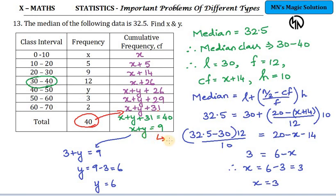This is the median. You should know the median class. 32.5 is given to us. It is a value which lies in between 30 to 40. So, obviously, median class is 30 to 40. So, median class is 30 to 40. Its lower limit is 30. And its corresponding frequency is 12. And cumulative frequency is x plus 4. Cumulative frequency of the previous class. It is x plus 4. Height is 10. 40 minus 30 which is 10.